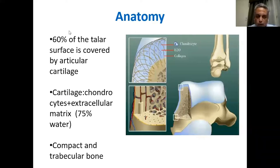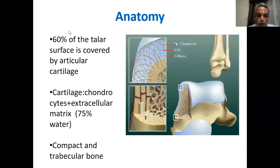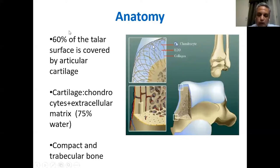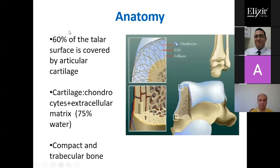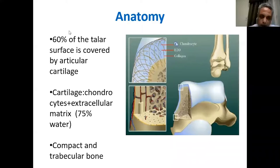The cartilage is composed of chondrocytes, which are the cells, plus the extracellular matrix. The extracellular matrix of the cartilage has got 75% water content — quite hydrous — giving it very good elastic properties. In addition to collagen fibers, it is type 2 collagen, giving it a good ability to withstand stresses and axial loads.